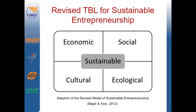This is the revised triple bottom line model for sustainable entrepreneurship proposed by Majid and Co. in 2012. As you can see, economic, social, and ecological well-being are key elements of sustainability, but a fourth element has been added that considers culture and the cultural aspect in a sustainable context.